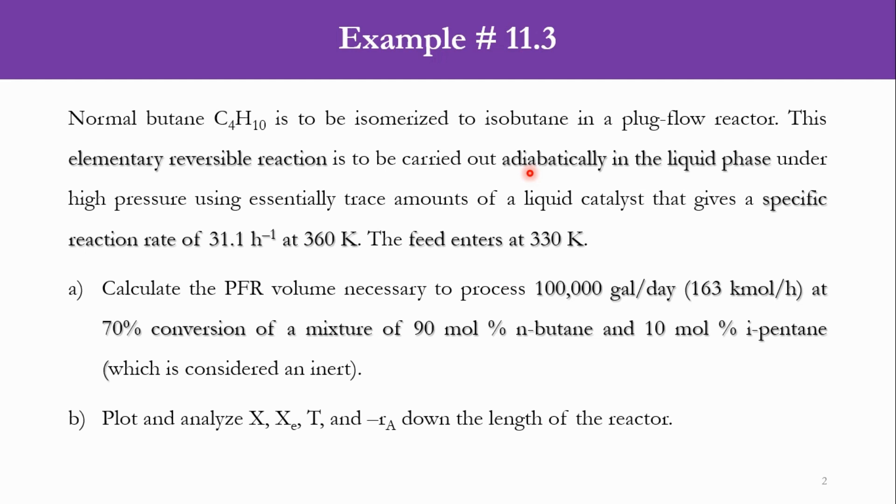What is the problem statement? Normal butane C4H10 is to be isomerized to isobutane in a plug flow reactor. This elementary reversible reaction is to be carried out adiabatically in the liquid phase under high pressure using essentially trace amounts of a liquid catalyst that gives a specific reaction rate of 31.1 per hour at 360 Kelvin.